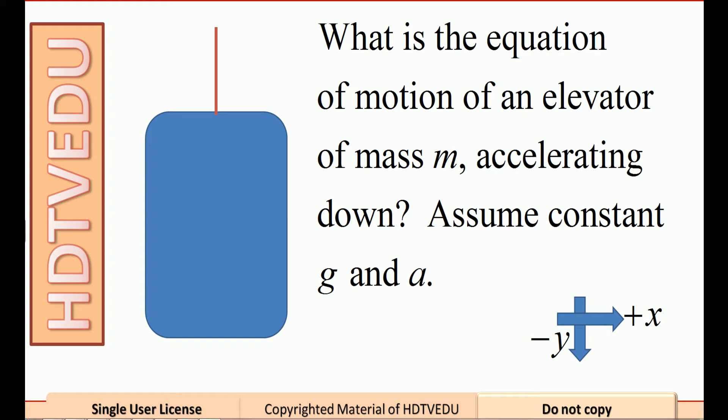What is the equation of motion for an elevator of mass m accelerating down? Assume constant acceleration due to gravity g and acceleration a.